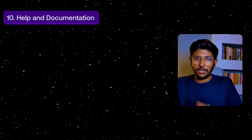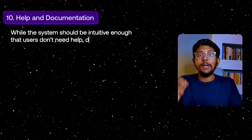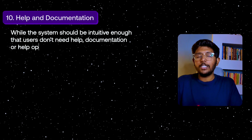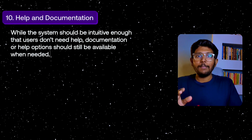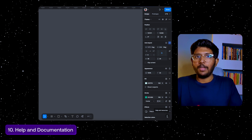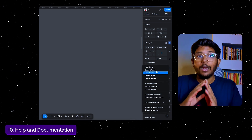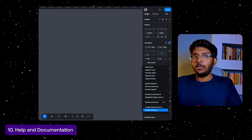Tenth principle: Help and Documentation. Even if you design the system well, there should still be documentation and help options for users. For example, in Figma, in the bottom corner, there are help options available, along with FAQs, support forms, and YouTube videos. If users face difficulty, help and documentation options should be available.